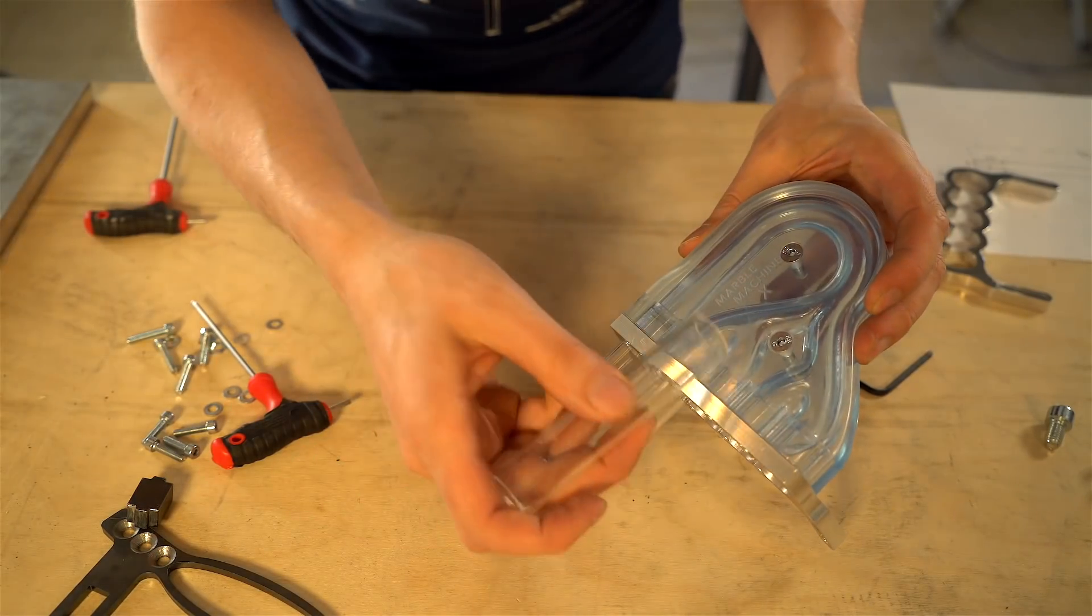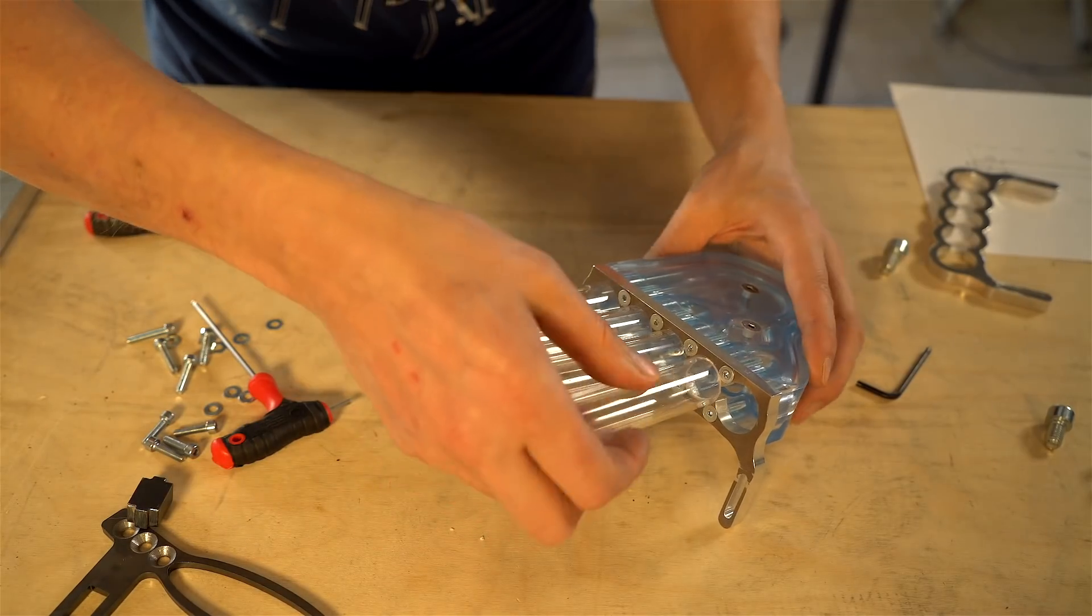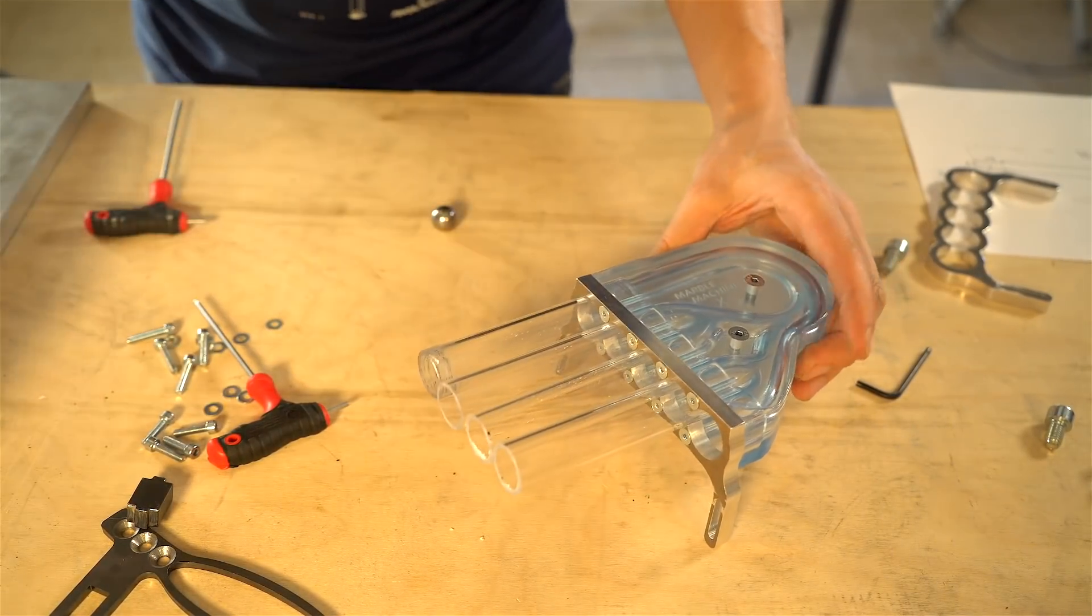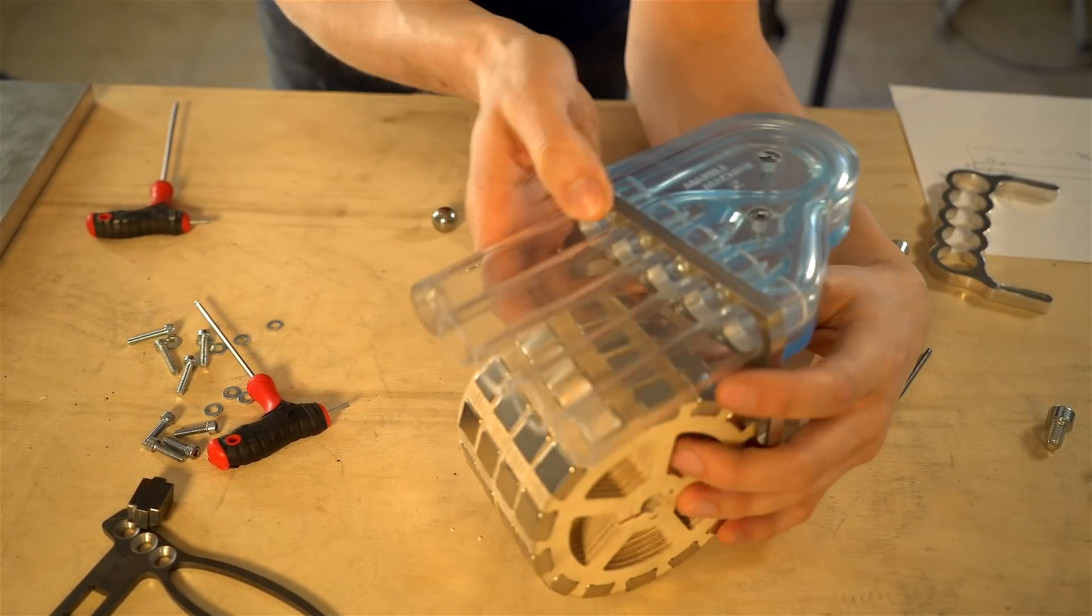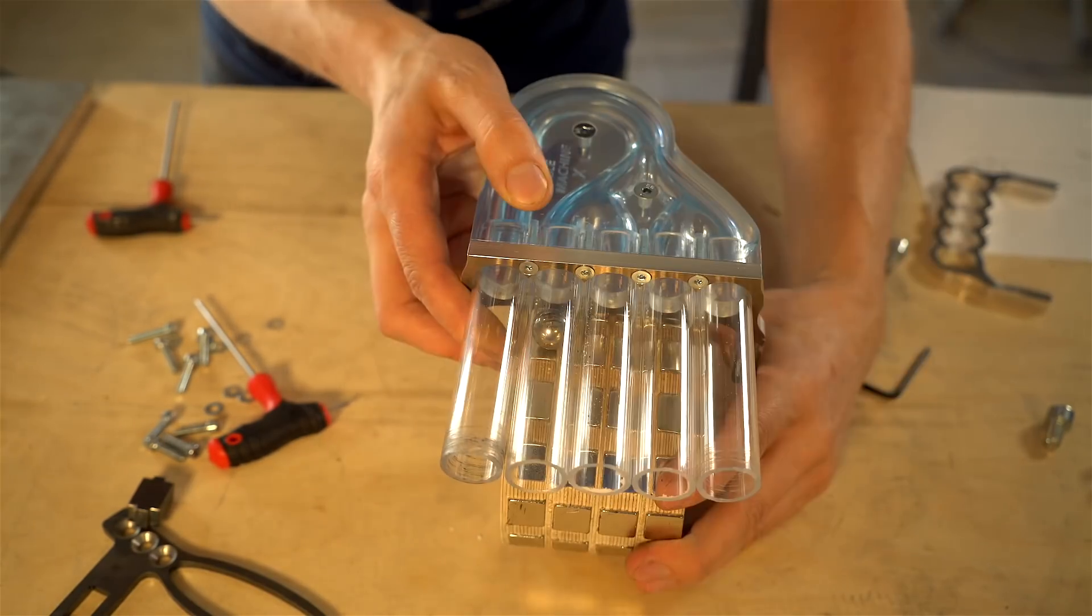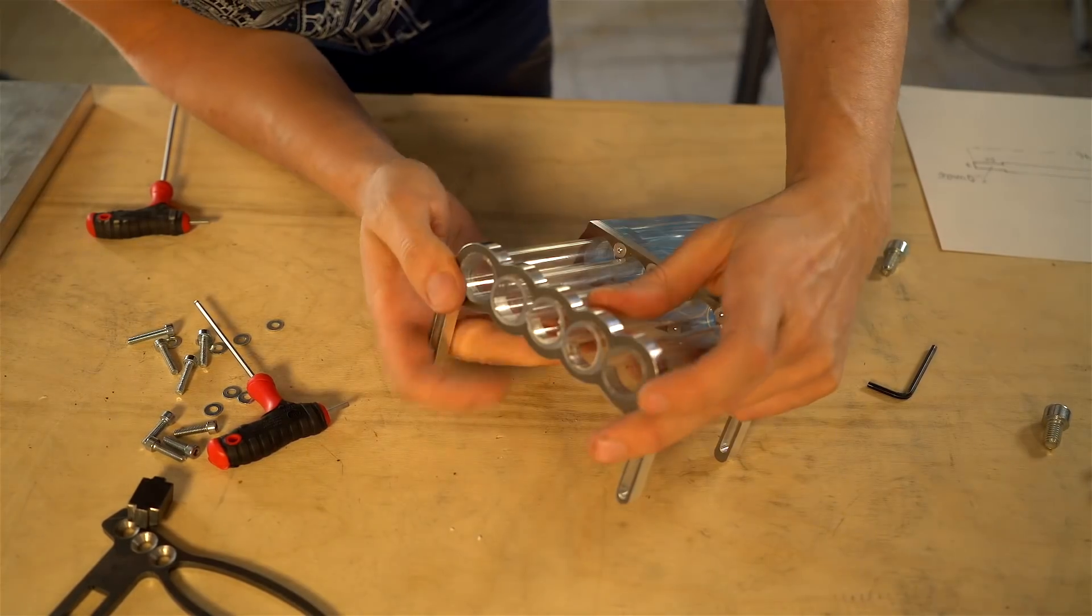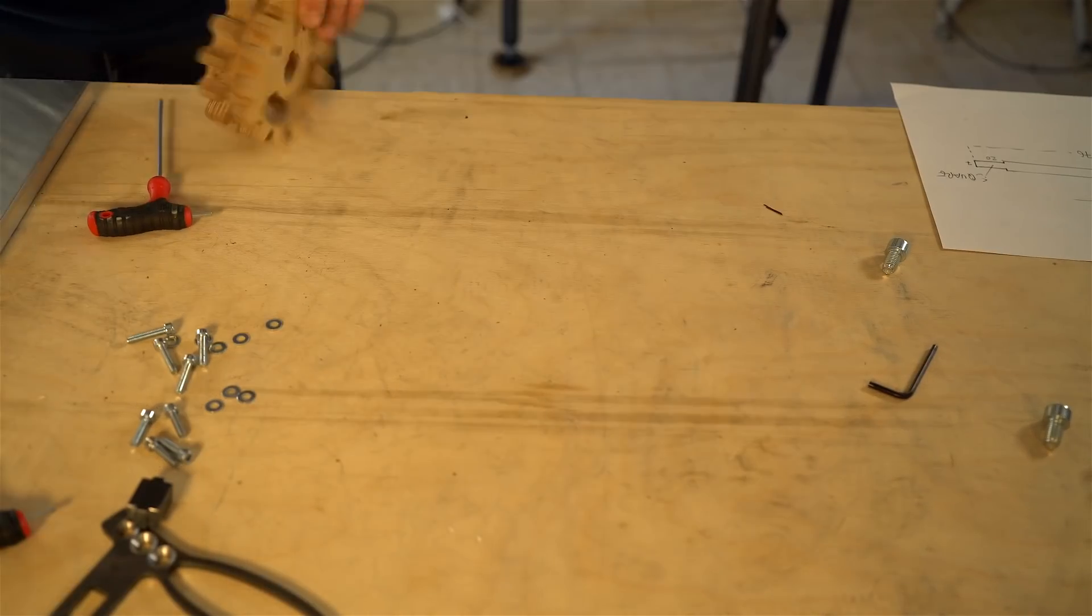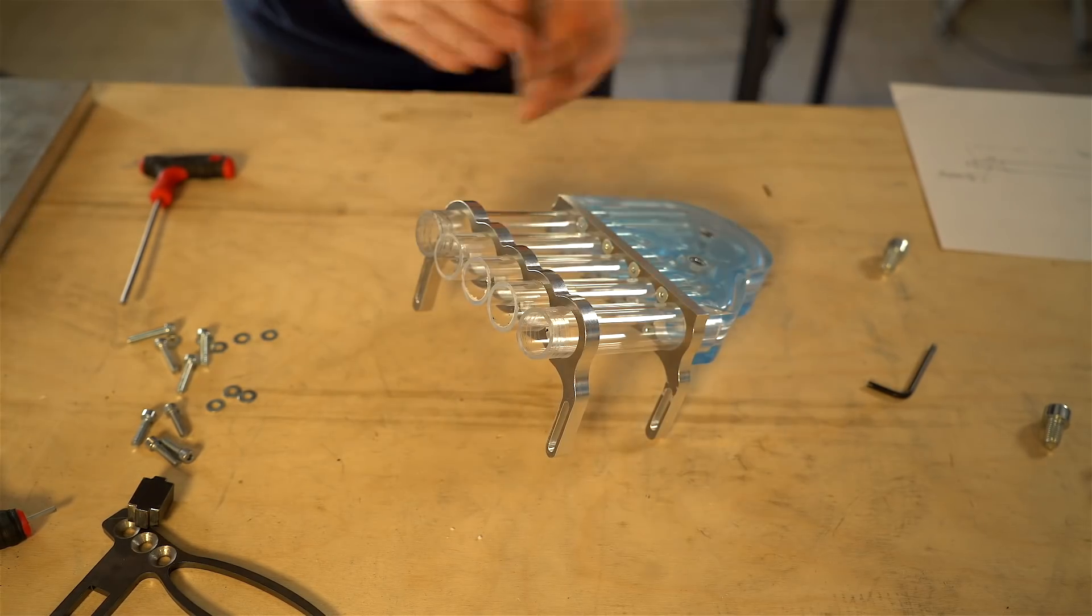These PMMA pipes go all the way into the plastic part. So these are scrap parts of PMMA pipe that I've just put on here now for the demonstration. And later the magnets are going to be under here. The marbles will be running in the pipes over these magnets. Now it looks like a Boston Dynamics dog instead.